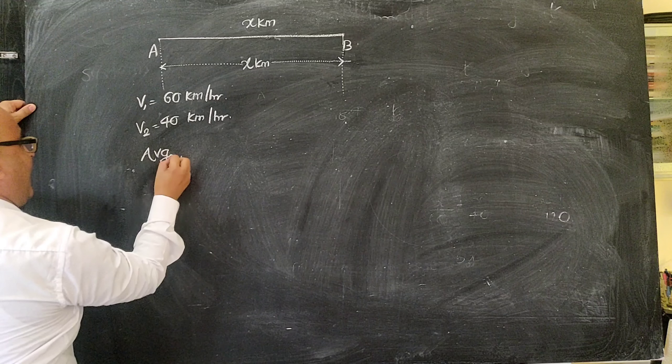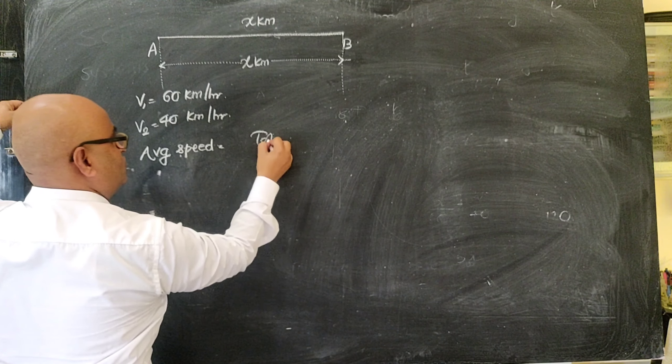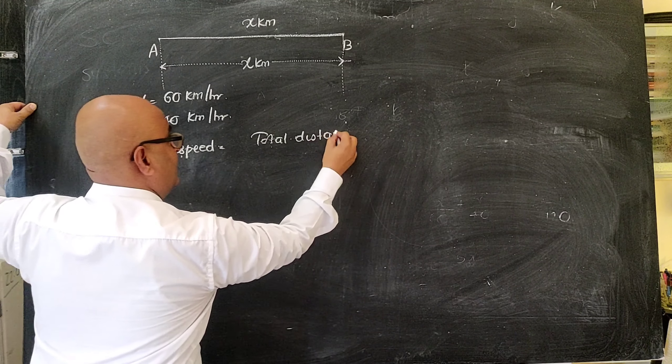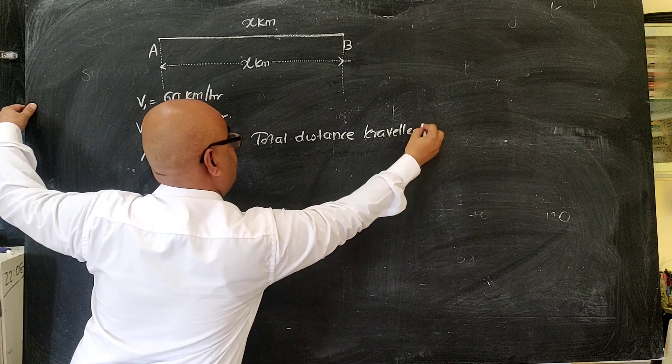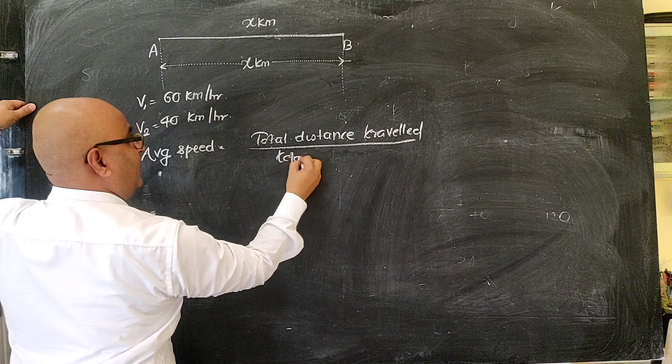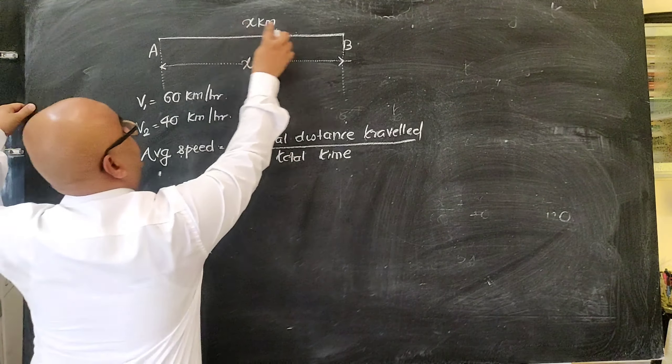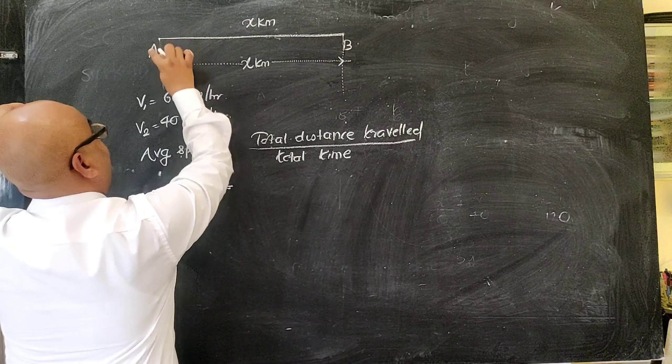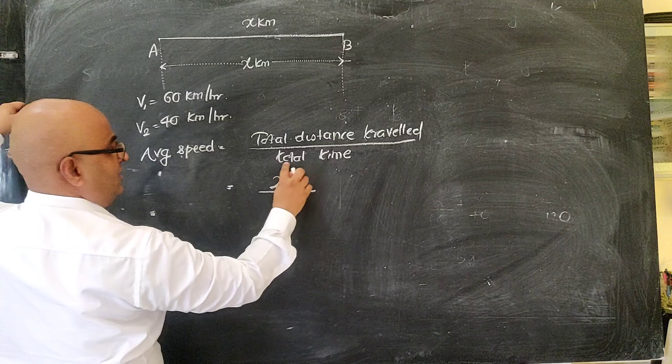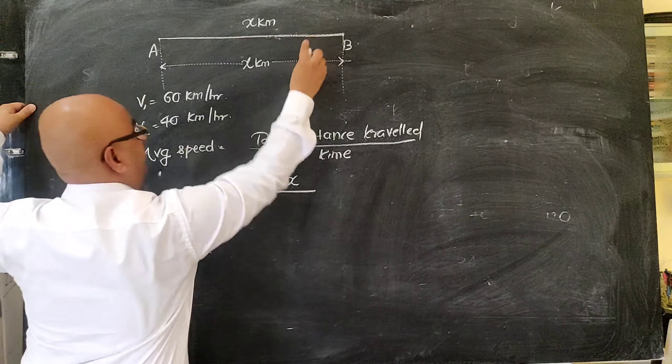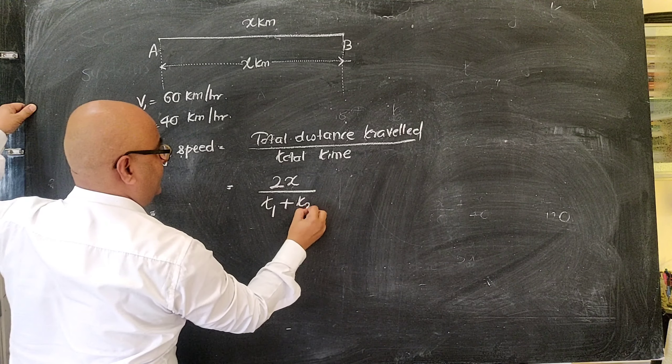Now what is the average speed? How to calculate the average speed? It is total distance travelled upon total time. Now the total distance from A to B is x and from B to A is also x. So total distance is 2x. And let the time taken from A to B be T1 and time taken from B to A be T2.